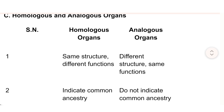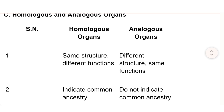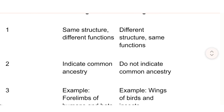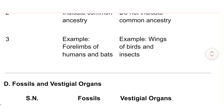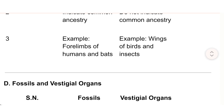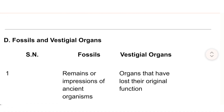C) Homologous vs Analogous organs: 1) Homologous organs have the same structure but different functions; analogous organs have different structures but the same functions. 2) Homologous organs indicate common ancestry; analogous organs do not. 3) Examples: four limbs of humans and bats (homologous); wings of birds and insects (analogous).